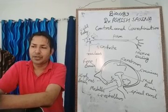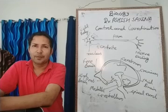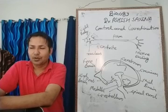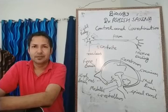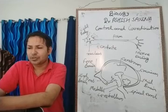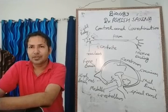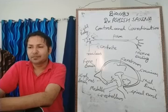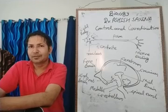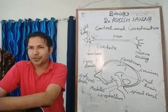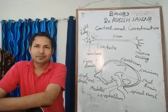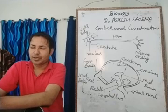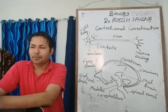The first chapter, Life Process, includes four systems. You will study the nutrition system, then respiration, then transportation and circulation. In this chapter you will study unicellular organisms, then plants, then animals like human beings.